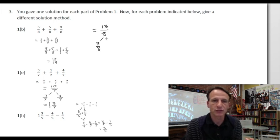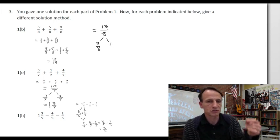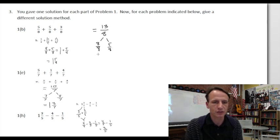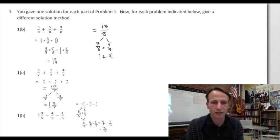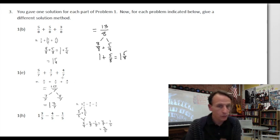We decompose thirteen eighths: pull out one whole as eight eighths, and that leaves — eight and thirteen, who's missing? Five! Five eighths. So together, one whole plus five eighths equals one and five eighths. Splendid!